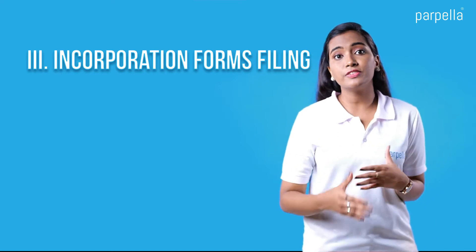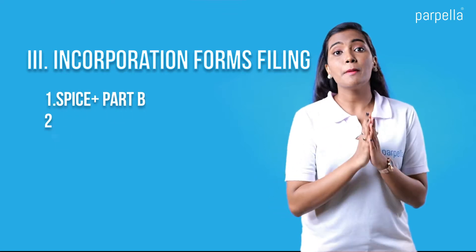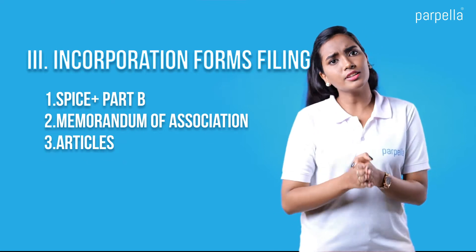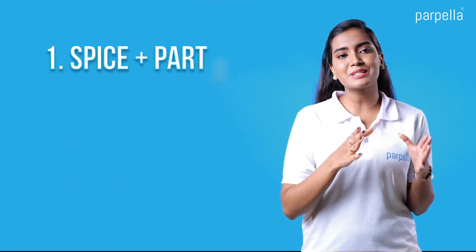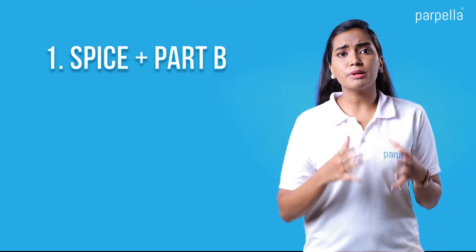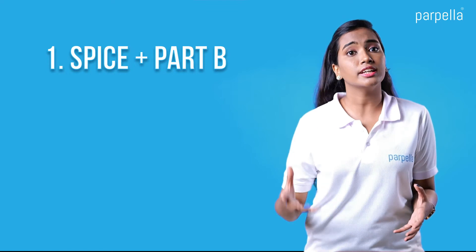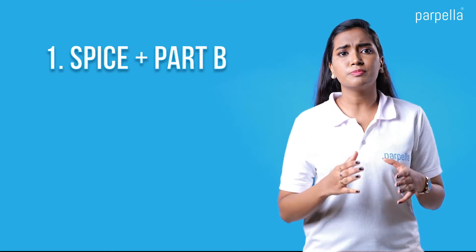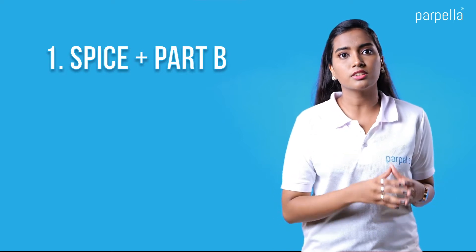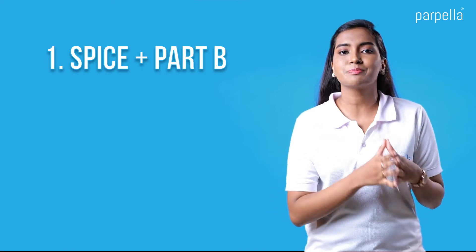The third step is incorporation forms filing. Once through the name reservation, we need to fill and file the incorporation forms, which include SPICe+ Part B, Memorandum of Association, Articles of Association, and the AGILE form with the MCA. The first form, SPICe+ Part B, declares details of proposed directors, shareholders, and basic incorporation details such as the location and nature of business activities. Identity and address proof of proposed directors and shareholders, along with their consent and declaration, shall be attached with the SPICe+ form.